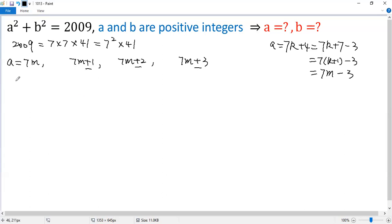Now let's calculate a squared. So a squared equals 49m squared, or 49m squared plus or minus 14m plus 1.